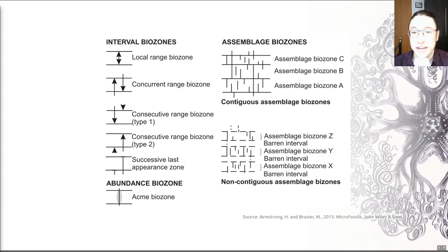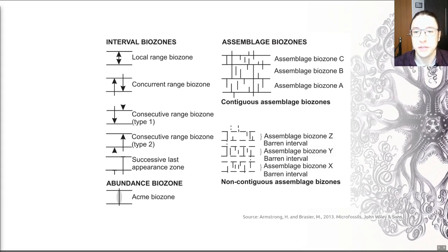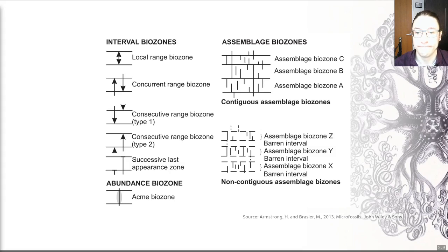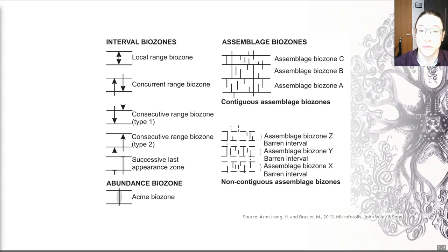We also have consecutive range biozones, shown diagrammatically here. This is based on the consecutive ranges of fossils within an evolving lineage — each is defined by the first appearance of a species in a speciation event. So what we're seeing here is the range of a taxon within an evolving phylogenetic lineage. And we often use for this, rather than the first appearance of two species, the last appearance of two species. This is shown here — the successive last appearance biozone. So rather than two appearances, we're talking about two extinctions here.